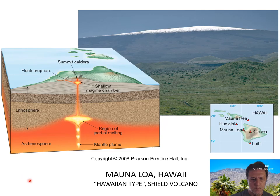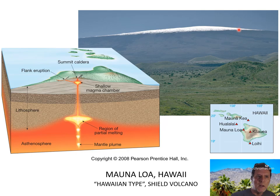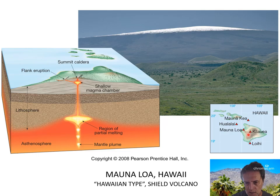This is Mauna Loa, a Hawaiian-type shield volcano — a beautiful mountain with actually snow on top. You might not think Hawaii gets snow, but get high enough in the atmosphere with cold enough temperatures and enough moisture and you get snowfall on the top of Mauna Loa. Here's a map of the Big Island of Hawaii showing Mauna Loa. In cross section, you have the asthenosphere and a mantle plume.